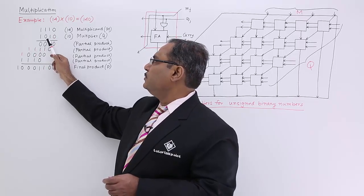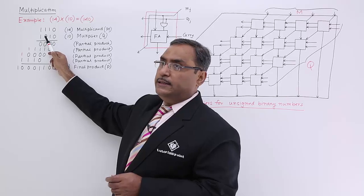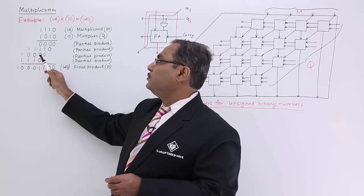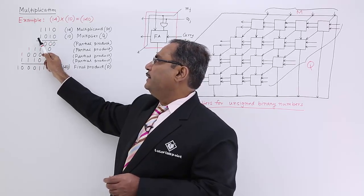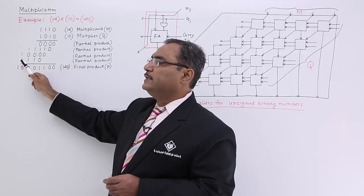Then the next bit in the multiplier is 0, so it will be coming like 0. And this bit is 1, so it will be coming like this bit pattern.